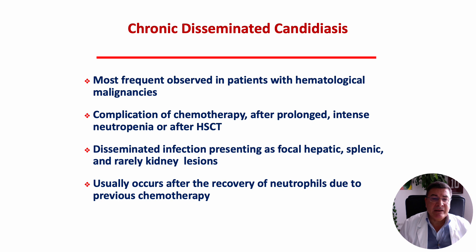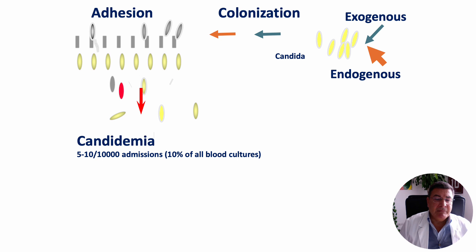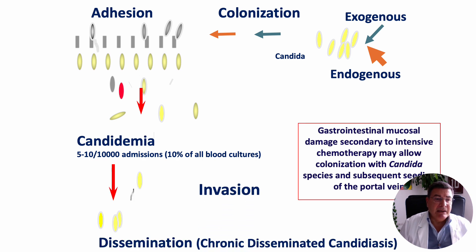Usually we can observe these clinical manifestations not during the aplasia, but when the neutrophil count rises after chemotherapy treatment. The mechanism is clear: it is a consequence of a candidemia with infiltration of the portal vein and dissemination to the abdominal organs.